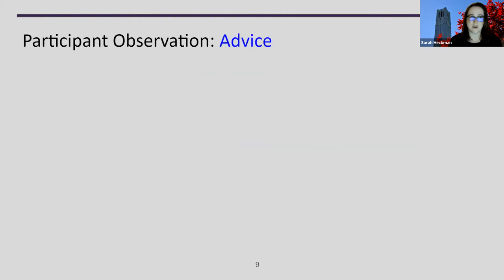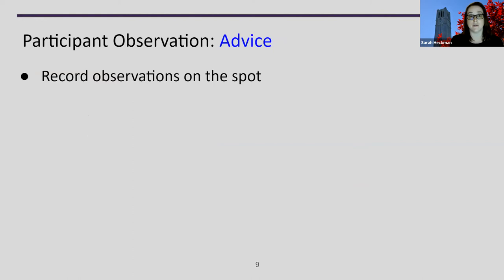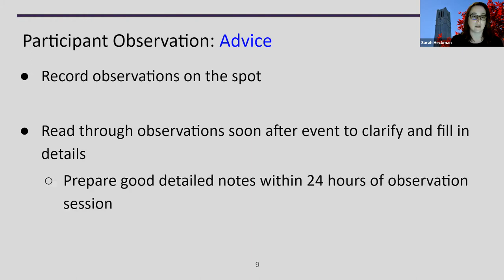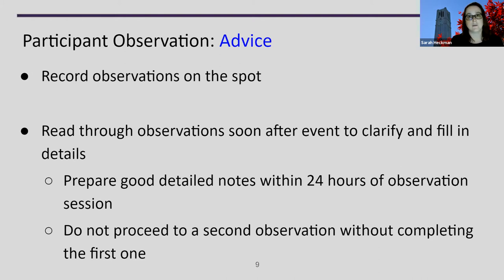Some advice for doing participant observation: you should record observations on the spot — you might think you'll remember it later, but you probably won't. Make sure you read through all observations soon after the event to clarify and fill in any details you may have missed. If you go through your notes close to when you did the observation, you can fill in missed details very quickly. Do this within 24 hours of the observation session and before you proceed to the next session. If you wait, you'll start getting sessions confused and your data will be less reliable.